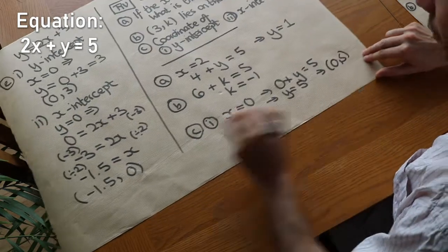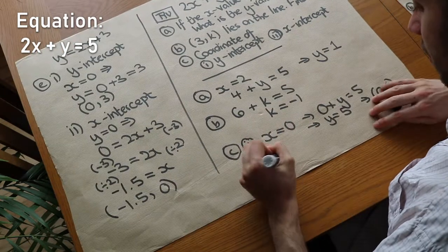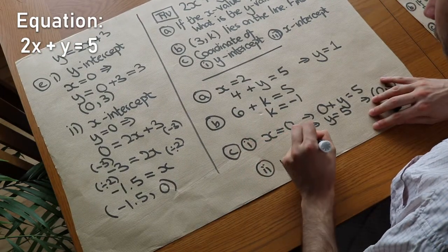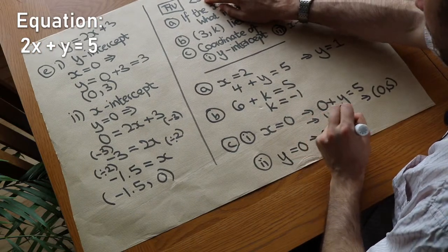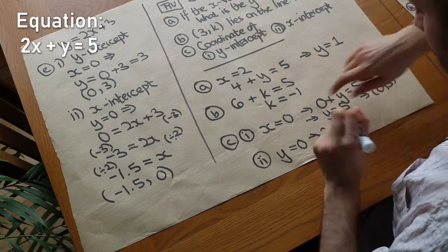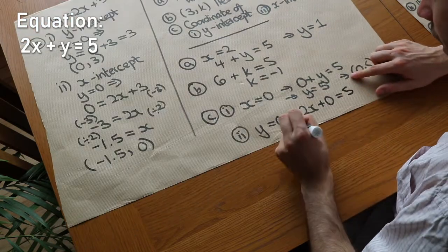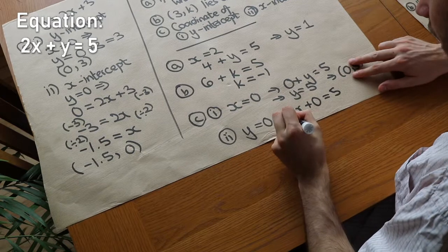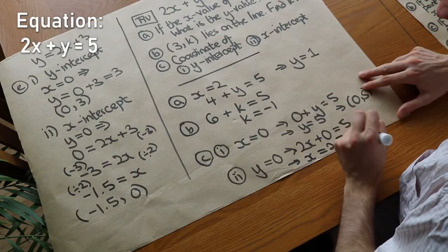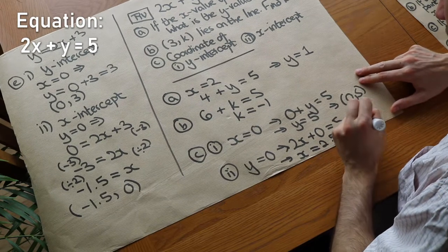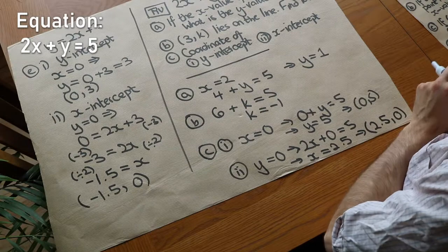For the x-intercept we make y equal to 0. So 2x plus 0 equals 5, which simplifies to 2x equals 5. Dividing both sides by 2 gives x equals 2.5, so the coordinate of the x-intercept is 2.5, 0. Well done if you got those right!